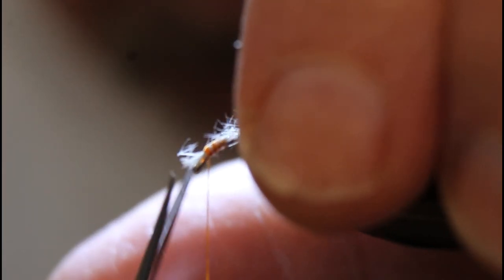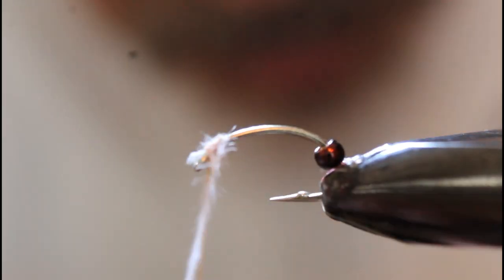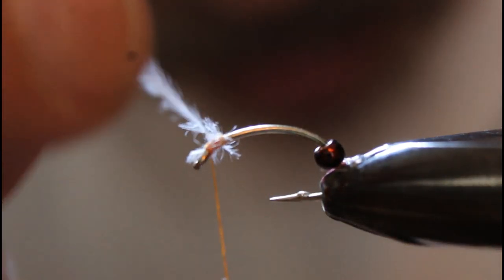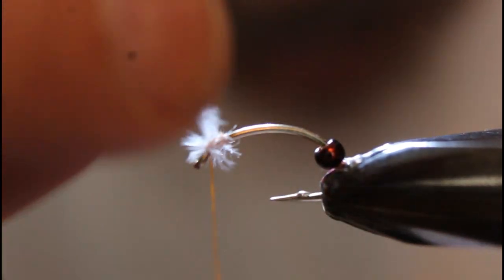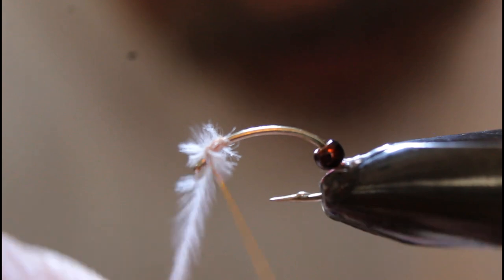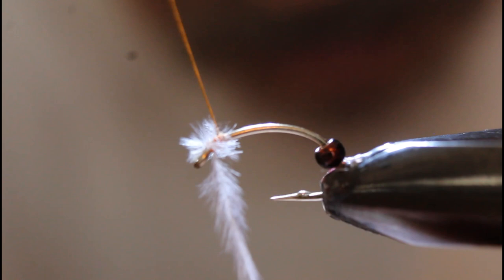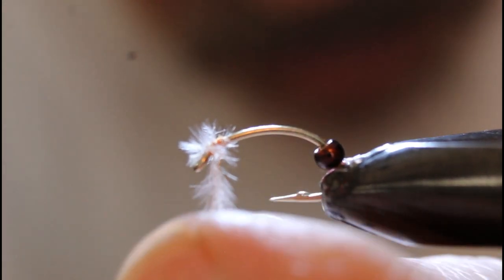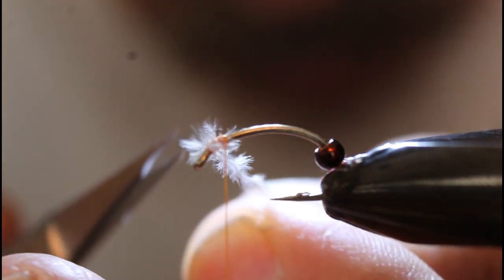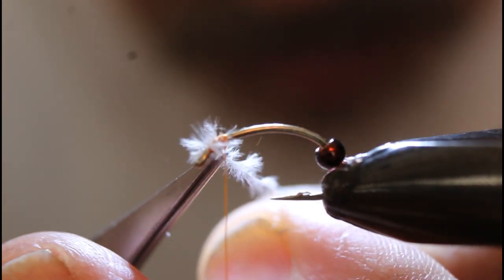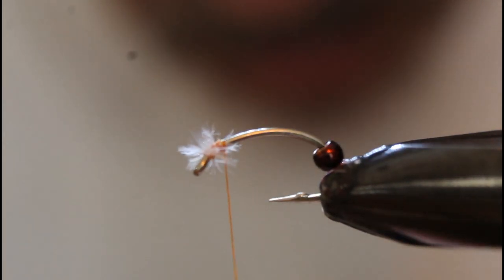Trying to get that secured in place. We'll get that tag end cut off and then we're going to wrap our ostrich hurl around. I usually do about three wraps to get the right number of gills, the bushy looking gills that I'm looking for.